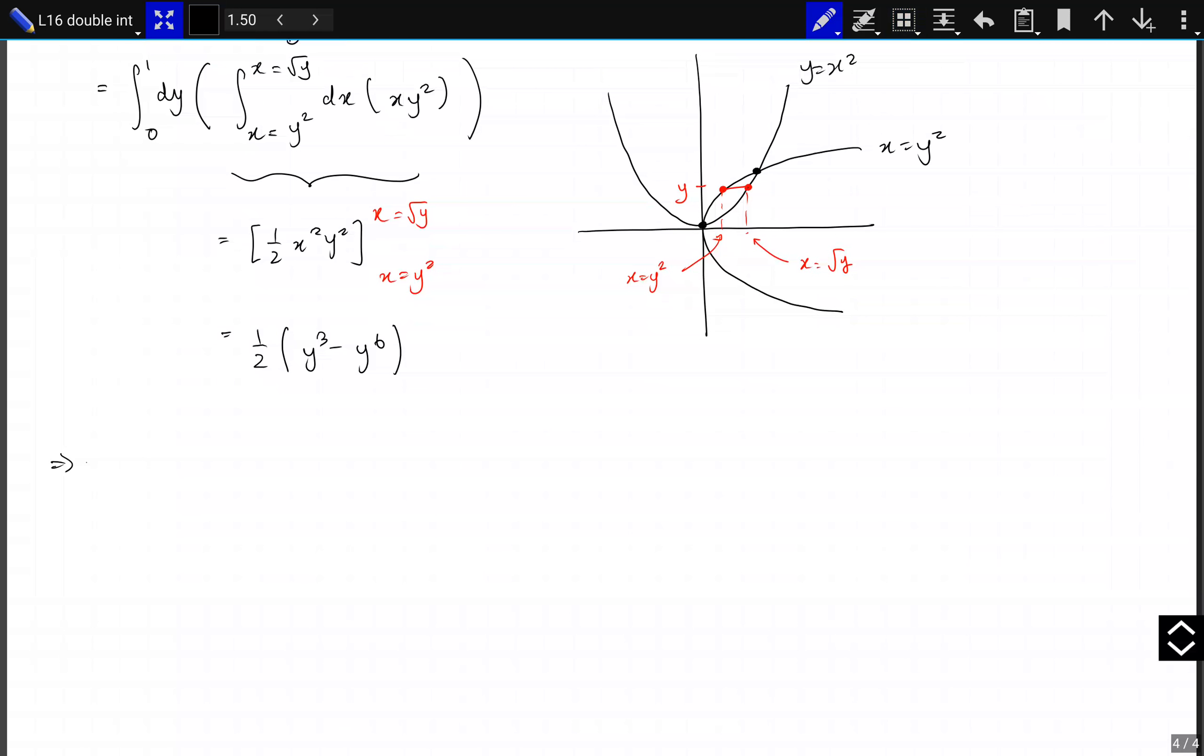Therefore, the whole integral equals... If you evaluate this, it gives you one-half of a quarter minus a seventh, minus zero. And that equals 3 over 56. I hope that's been useful.